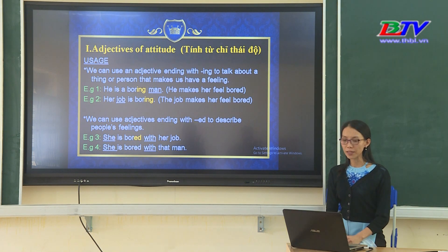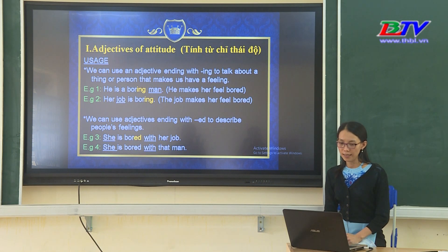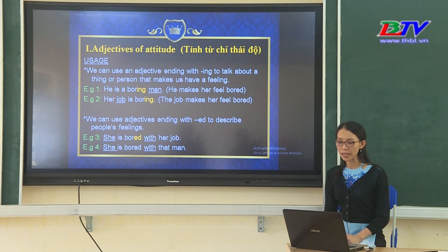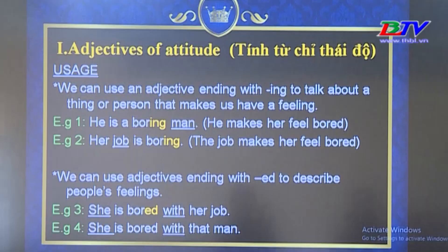We can use an adjective ending with -ing to talk about a thing or person that makes us have a feeling. Chúng ta có thể sử dụng tính từ kết thúc với -ing để nói về một thứ hay người mà làm chúng ta có cảm giác nào đó. For example: 'He is a boring man — he makes her feel bored.' 'Her job is boring — the job makes her feel bored.' We can use adjectives ending with -ed to describe people's feelings. For example: 'She is bored with her job.' 'She is bored with that man.'